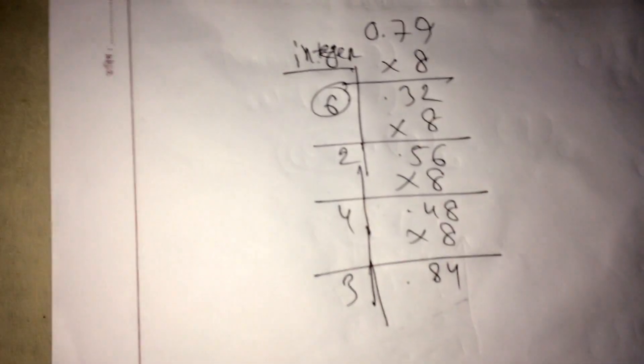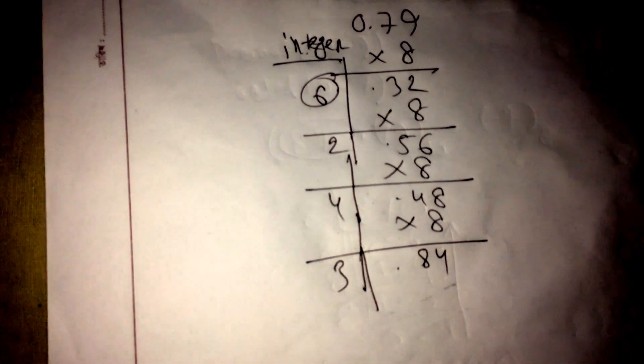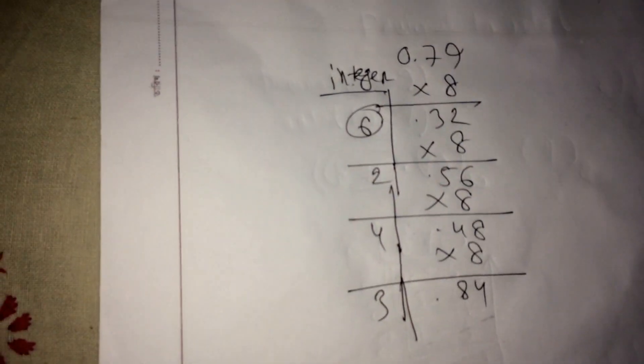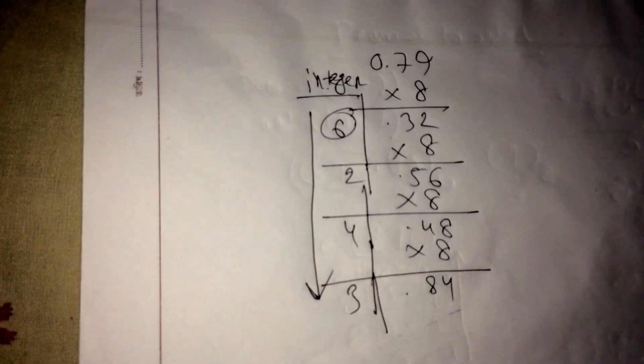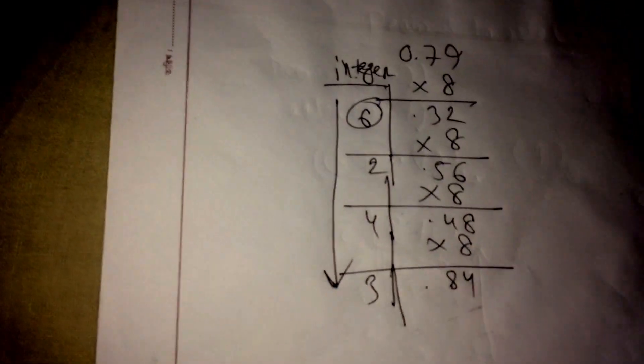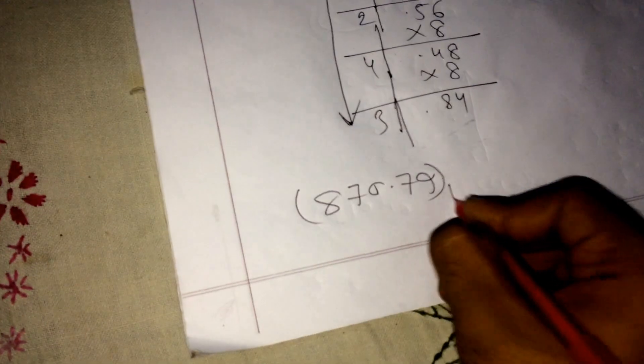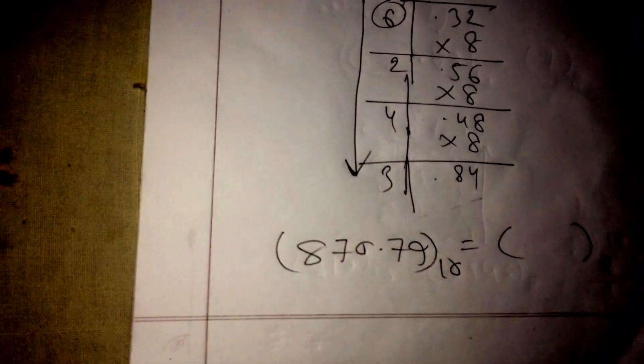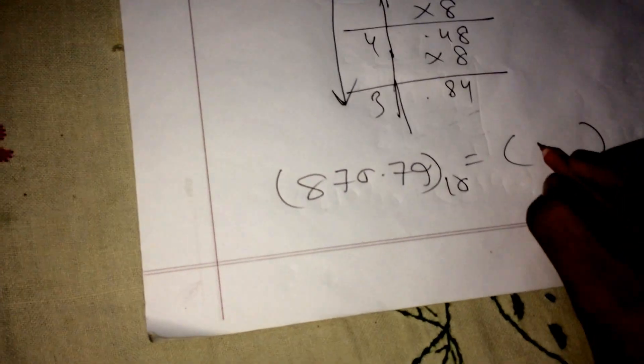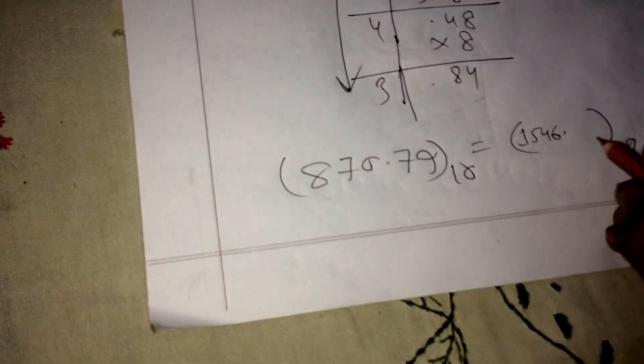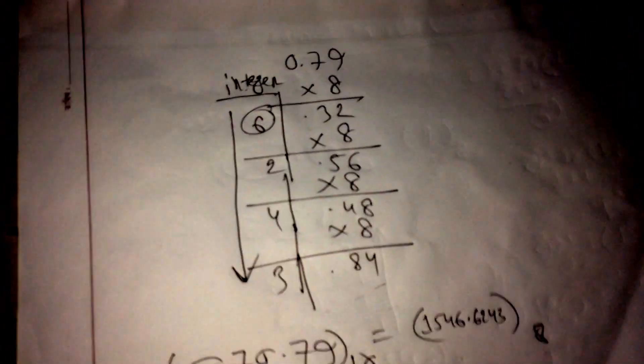Continuing: 0.56 multiplied by 8 gives 4.48, and 0.48 multiplied by 8 gives 3.84. This is a continuous process — it never stops. So at three or four iterations we stop, counting top to bottom. The final result of 870.79 decimal to octal is 1546.6243.